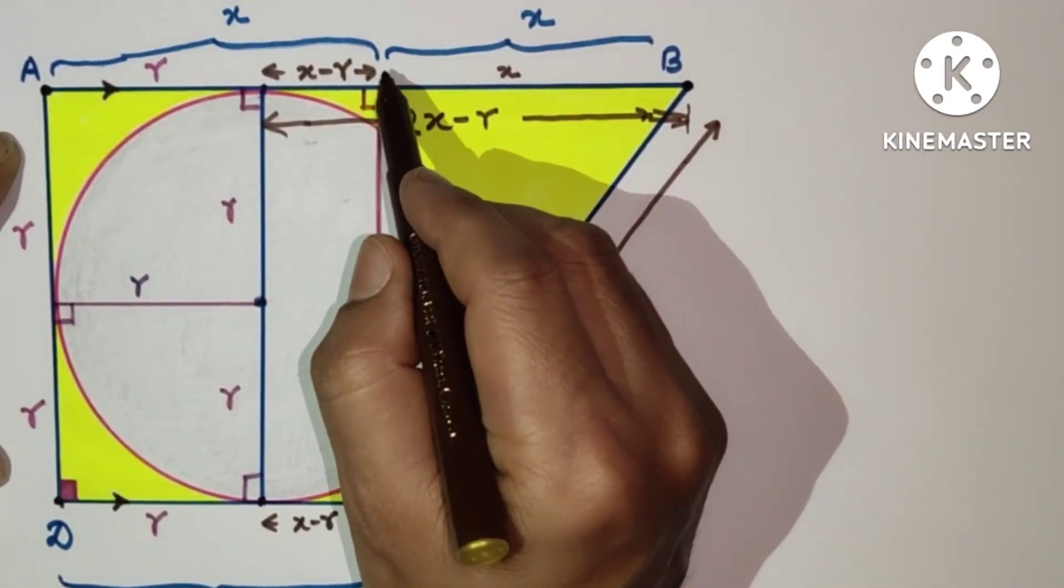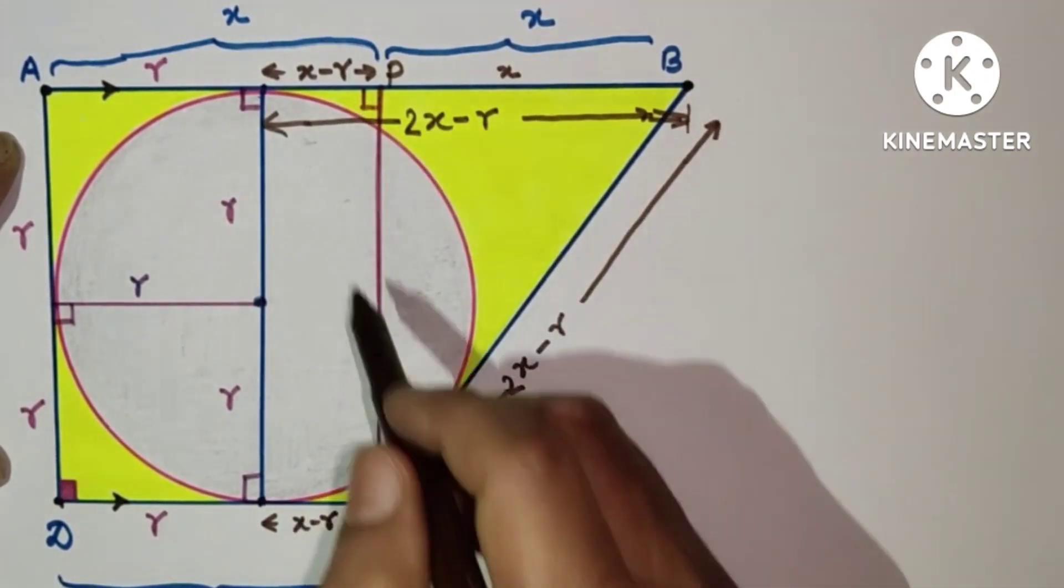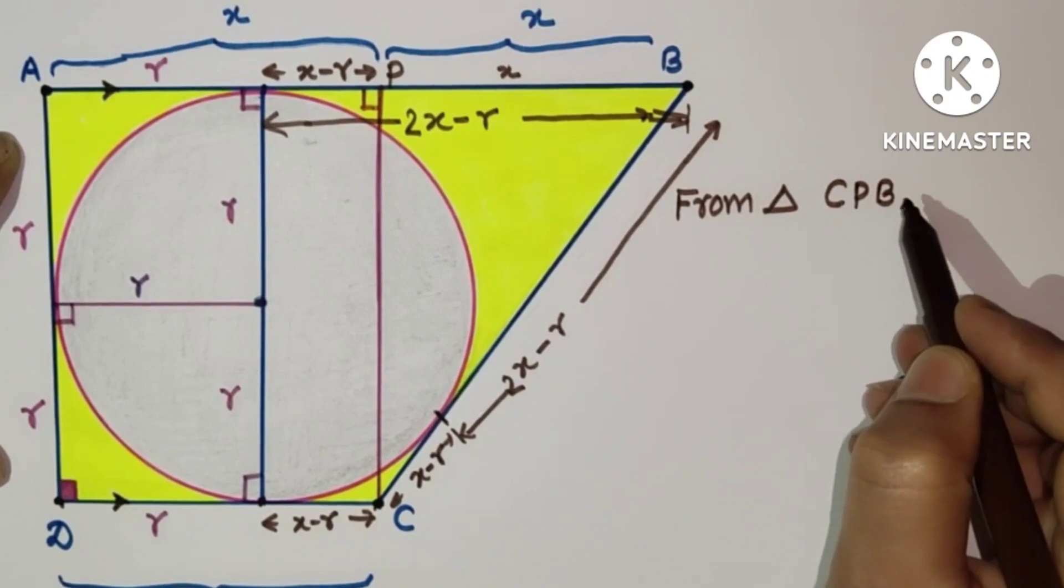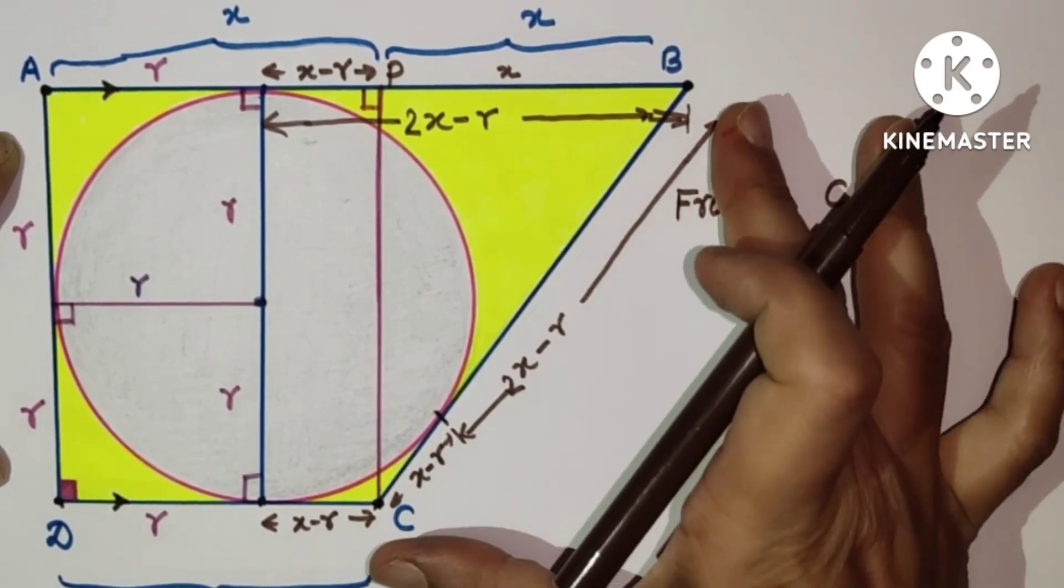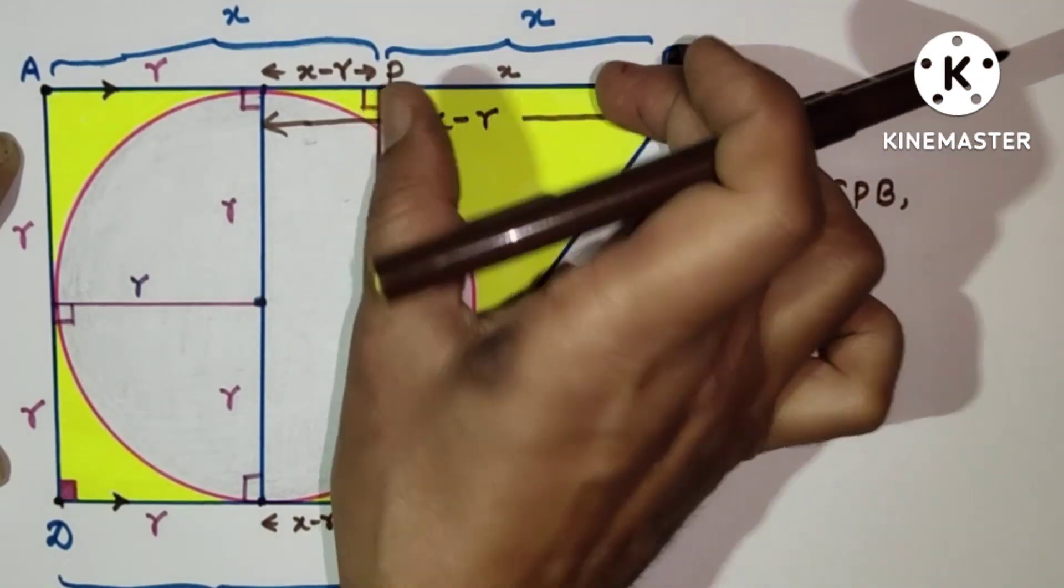Let us suppose this point is P. Using right angle triangle CPB, so from triangle CPB, by Pythagorean theorem, this BC square is equal to CP square plus PB square.